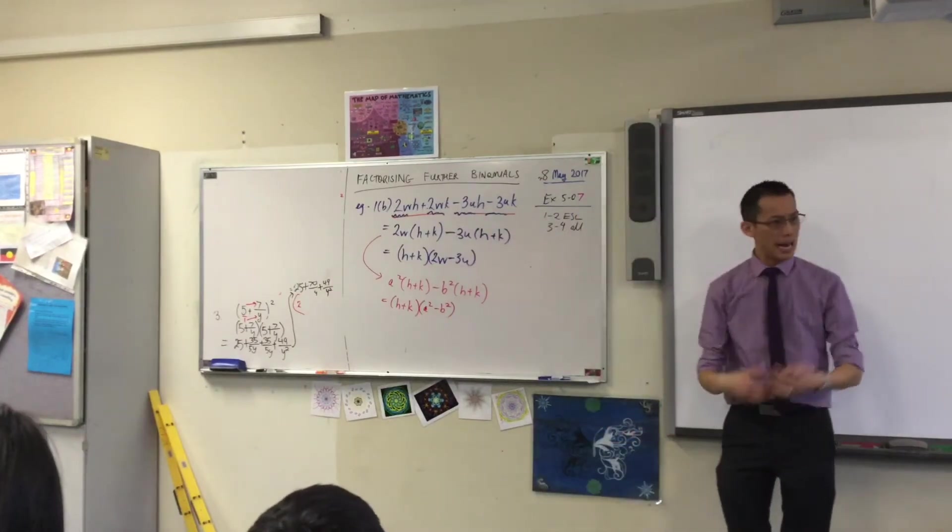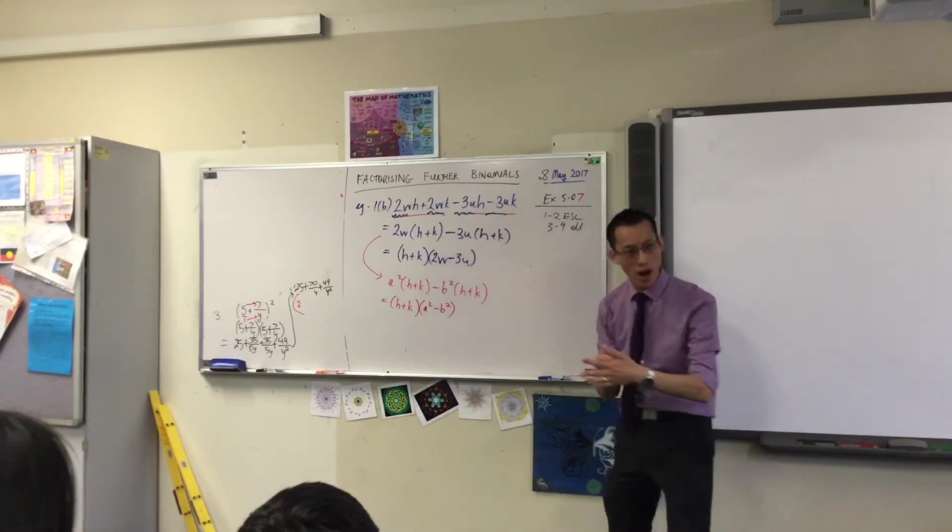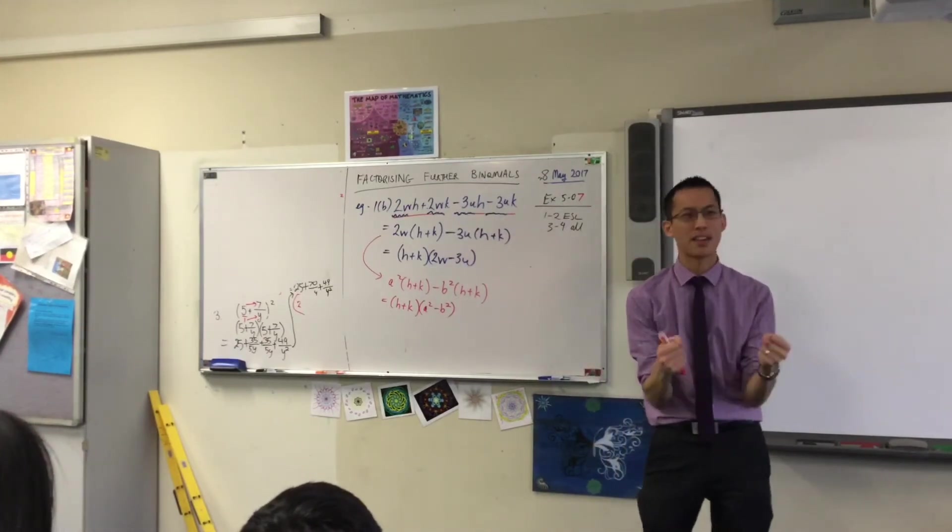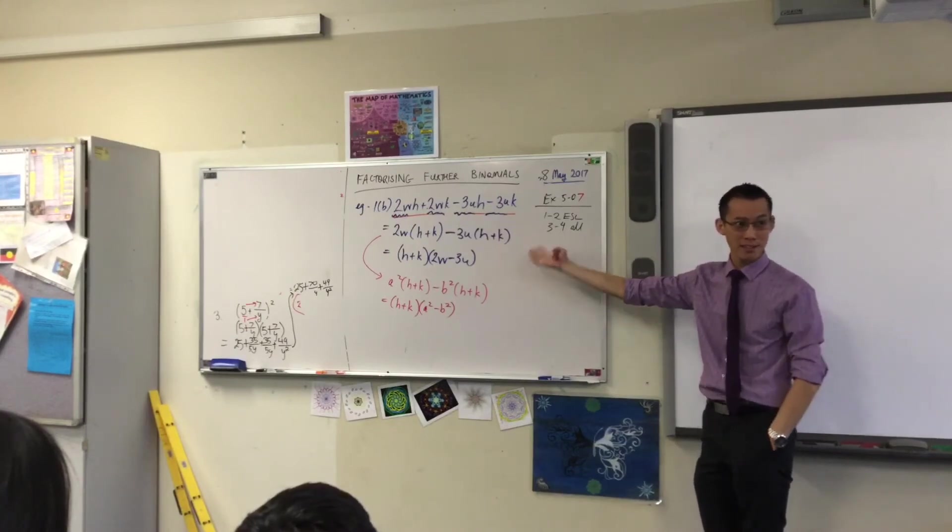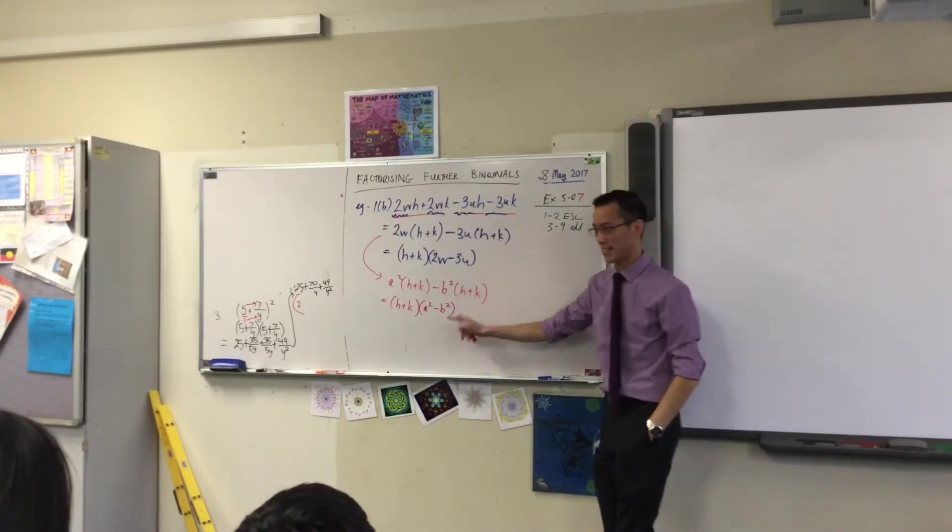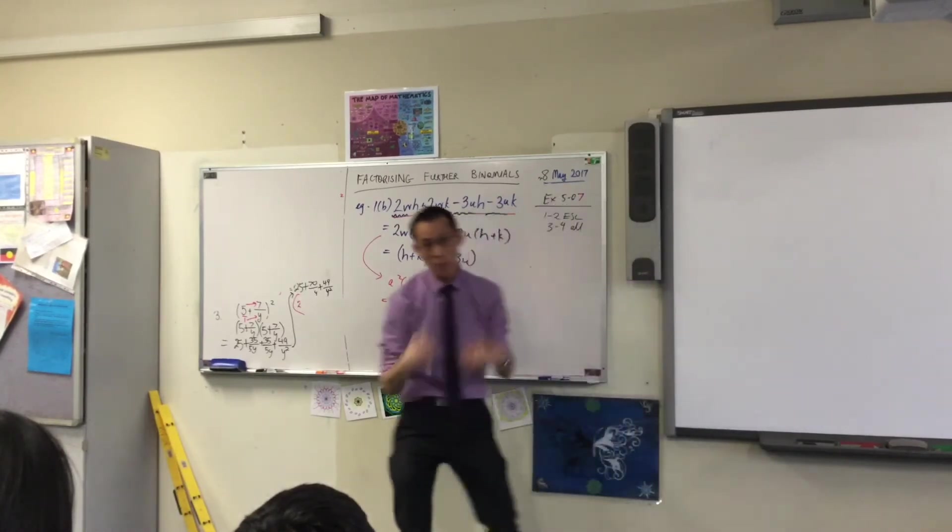And this is the thing you have to ask with factorization. There's many steps to it. How far can I push this? Is there anything else I can squeeze out of it? You can squeeze something else out of this. Namely, this thing here. It's difference of two squares again. So that means I can factor one more step.